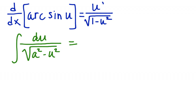Alright, section 5.7 guys — inverse trig functions but for integration. You've probably seen a pattern here: when you take the derivative of something you get a function, and then when you take that function and integrate it, you're going forward and backwards. So it should make sense that